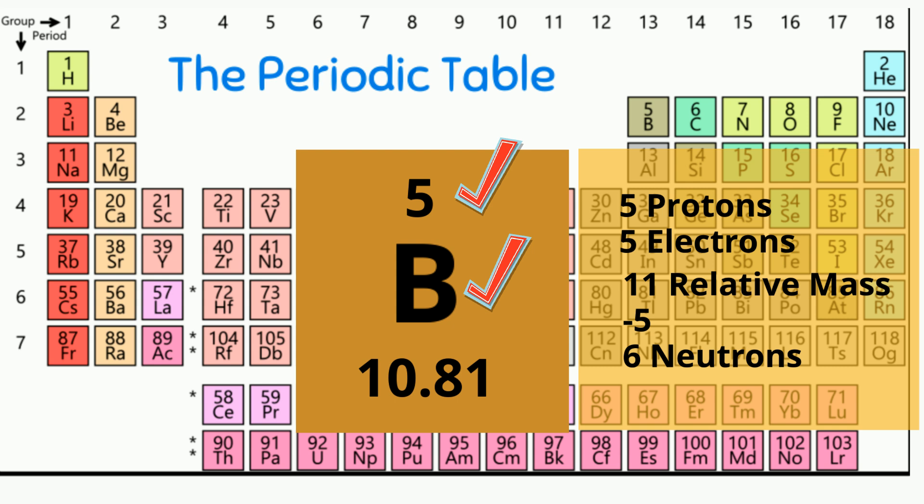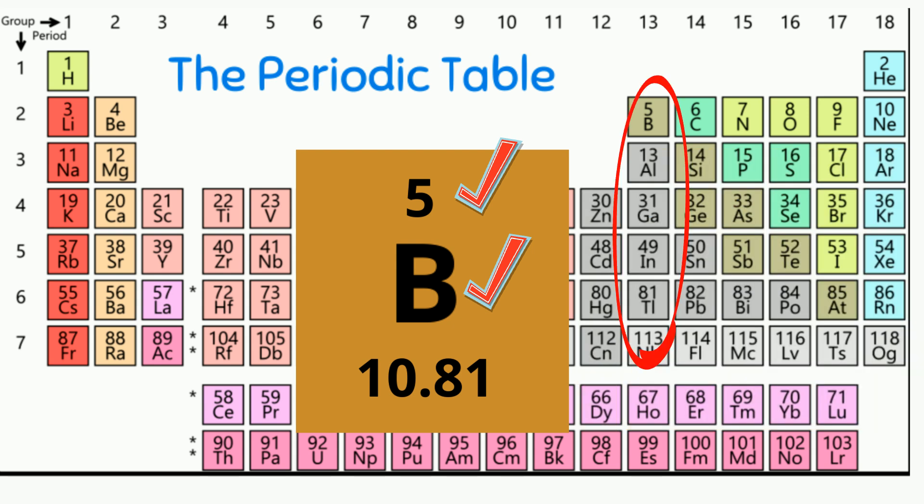It is a metalloid based on its color. And it is a solid. And finally it is in the boron family 13 so I know it has 3 electrons in its outer shell.